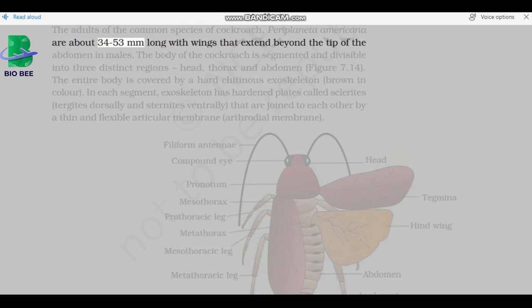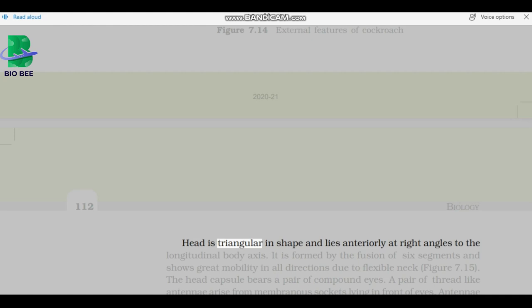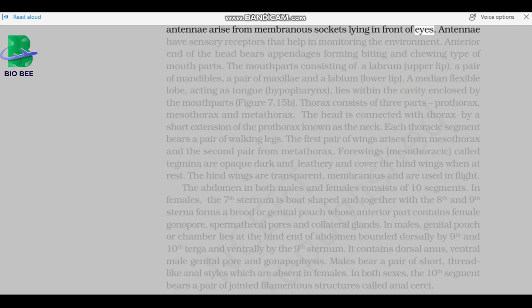Morphology: The adults of the common species of cockroach, Periplaneta americana, are about 34 to 53 millimeters long with wings that extend beyond the tip of the abdomen in males. The body of the cockroach is segmented and divisible into three distinct regions: head, thorax and abdomen. The entire body is covered by a hard chitinous exoskeleton, brown in color. In each segment, exoskeleton has hardened plates called sclerites, tergites dorsally and sternites ventrally that are joined to each other by a thin and flexible articular membrane, arthrodial membrane. The head is triangular in shape and lies anteriorly at right angles to the longitudinal body axis. It is formed by the fusion of six segments and shows great mobility in all directions due to flexible neck. The head capsule bears a pair of compound eyes. A pair of thread-like antennae arise from membranous sockets lying in front of eyes. Antennae have sensory receptors that help in monitoring the environment.